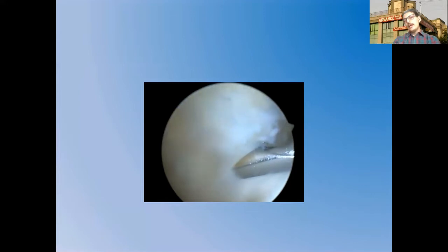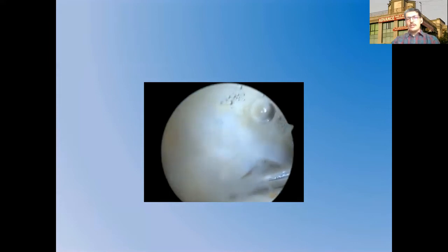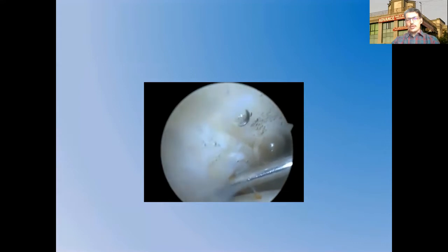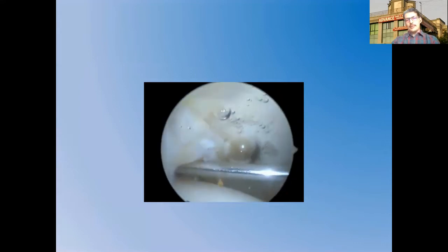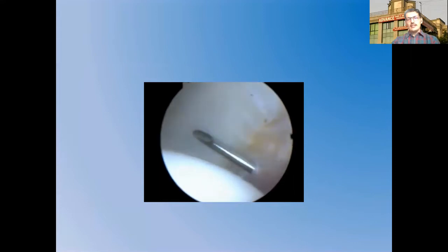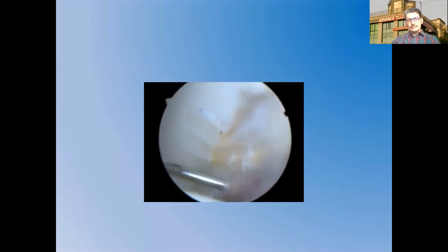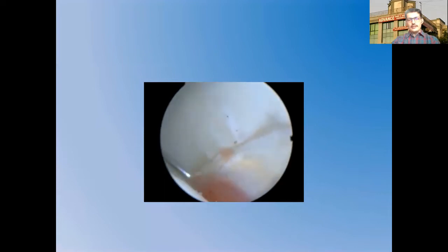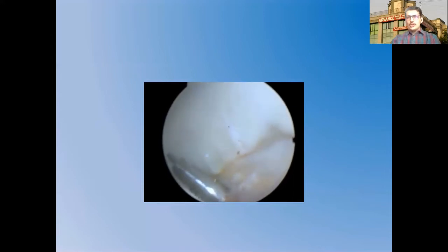A guidewire is inserted through the needle, the needle is removed, and cannulated instruments are inserted one by one. A cannulated trocar is inserted just below the labrum. The pulvinar and hip joint are visualized, and a half pipe is inserted through the cannulated instrument to increase maneuverability. The labrum is visible and does not appear normal.